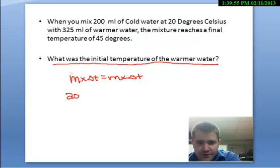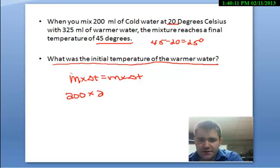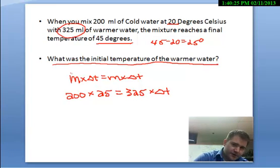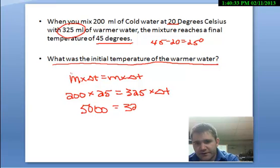The cold water, we have 200 milliliters or 200 grams of it, times its change in temperature is going from 20 as a starting temperature to the final temperature of the mixture, 45. 45 minus 20 equals 25 degrees temperature change. So 200 times 25 has to equal mass, 325 milliliters of warm water, times its change in temperature. And now I can solve. 200 times 25 equals 5000.